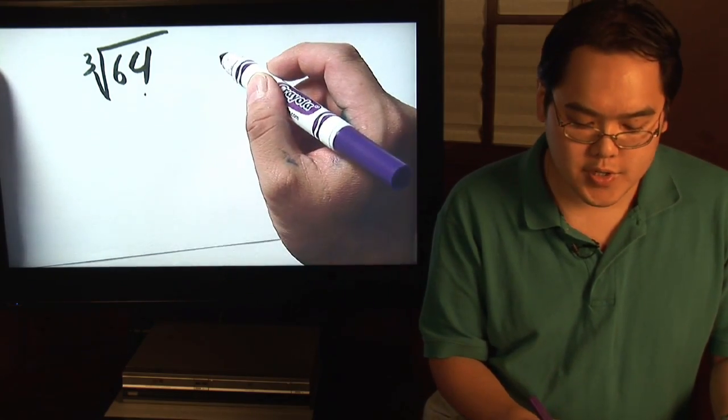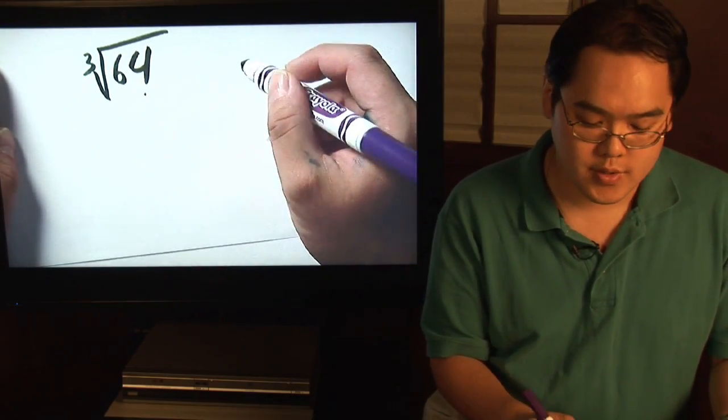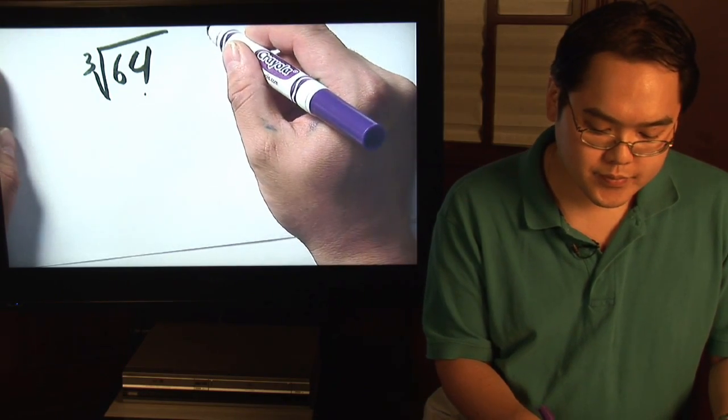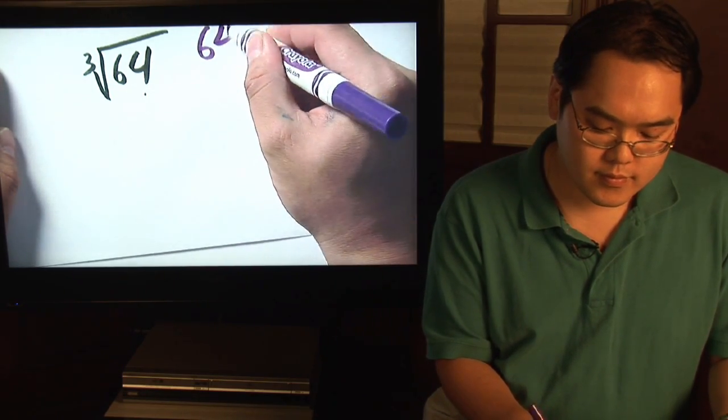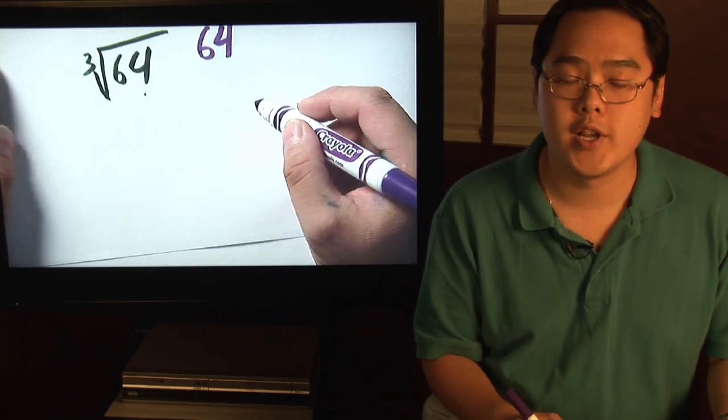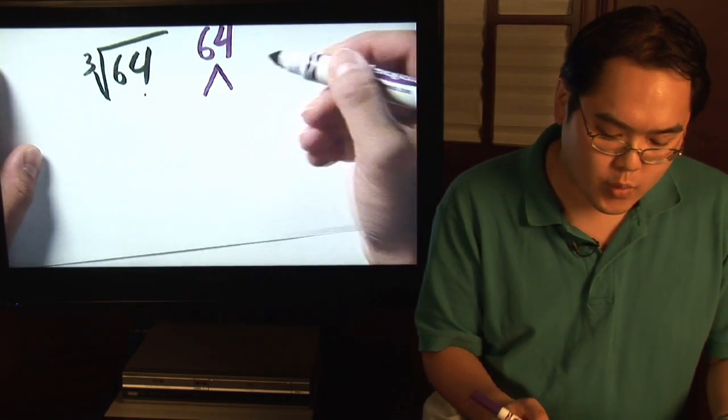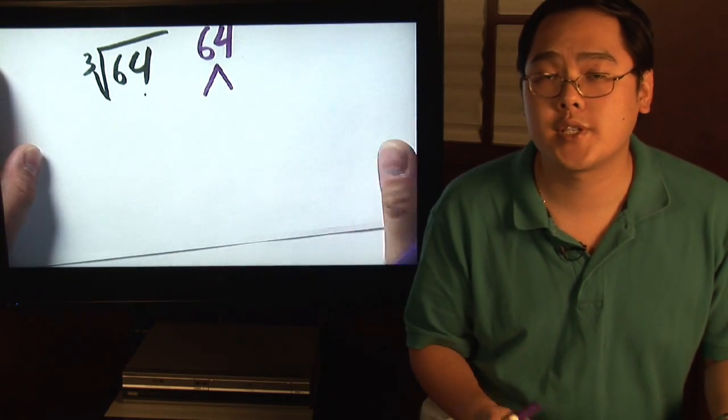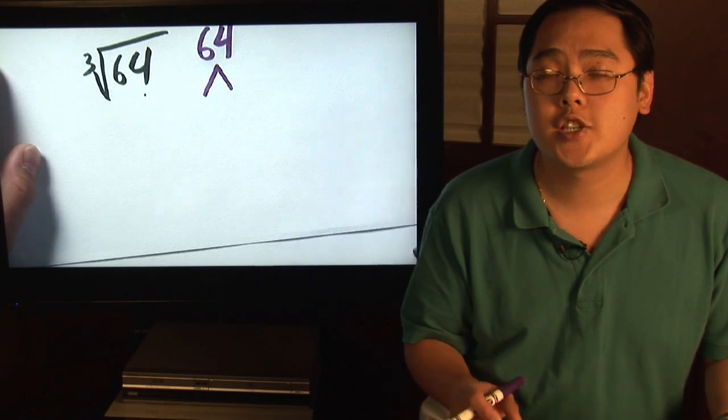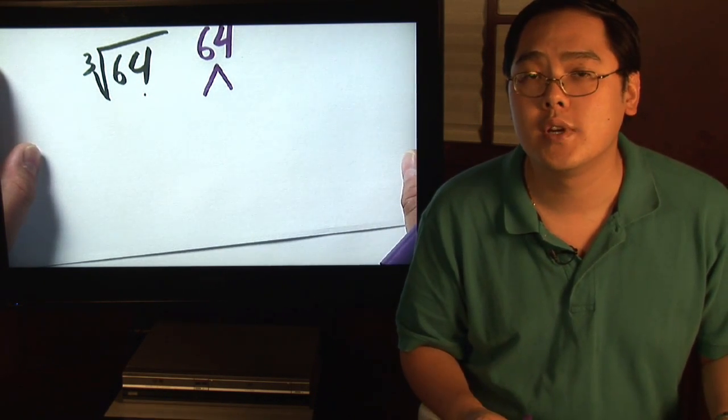Well, what you can do is you can break up 64 into a couple of ways. But first, let's break up 64 into a factor tree. One such example, and you can break up 64 as many ways as you want, but just come up with two numbers that multiply to give you 64.